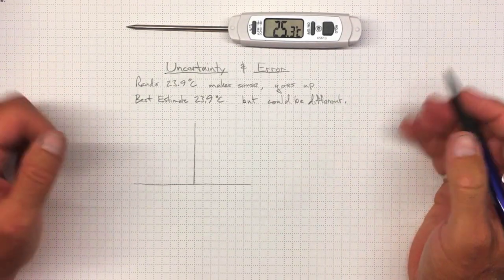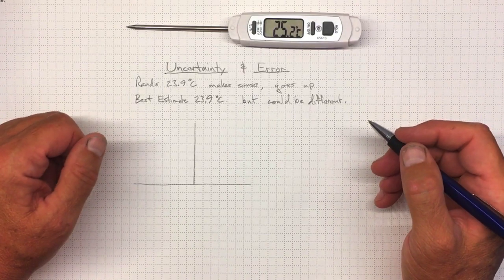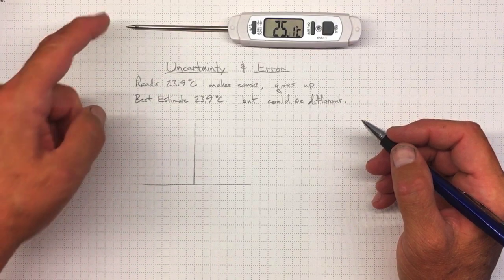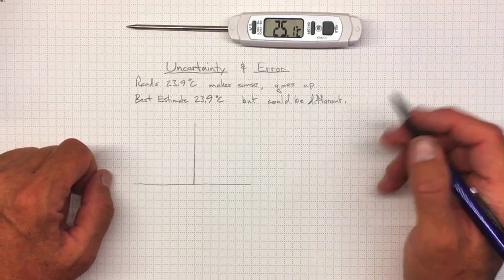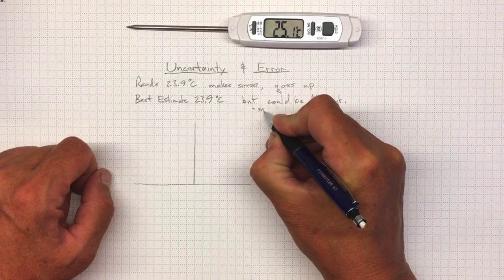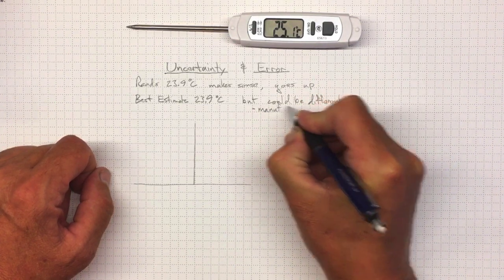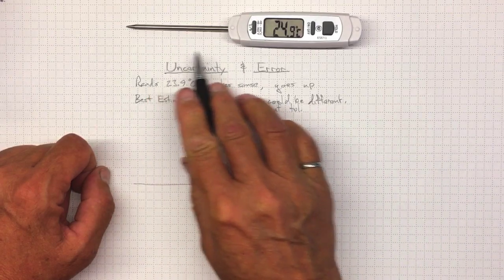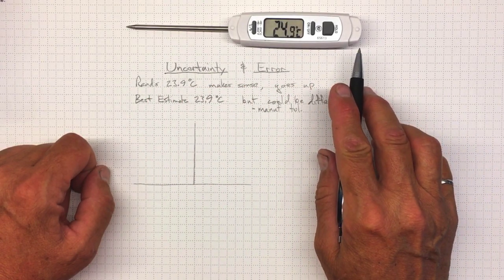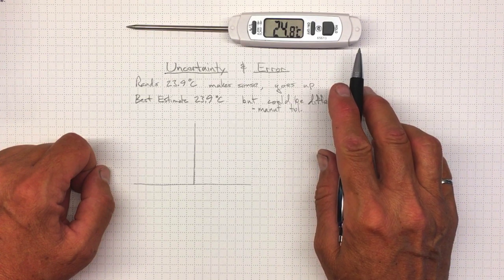And there are a bunch of reasons why this could happen. One is that I might have touched this before I made my measurement and so it was reading too warm and it would take a long time. Another would be typically manufacturing tolerances. If we make 100,000 of these, they won't all be exactly alike.